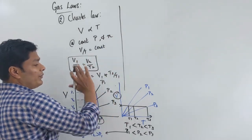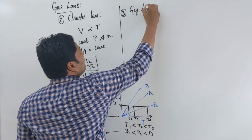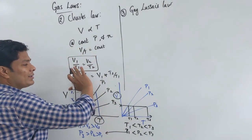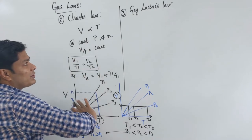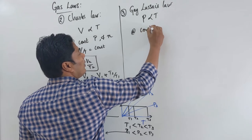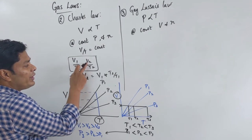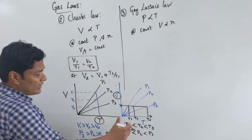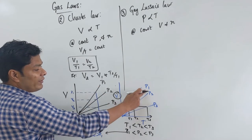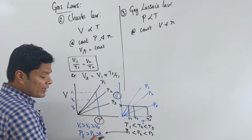Gay-Lussac's law is analogous to Charles' law, except here pressure is proportional to temperature at constant volume and moles. The mathematical form is P/T = constant, or P₁/T₁ = P₂/T₂. The graphs work the same way as Charles' law — just swap volume and pressure.